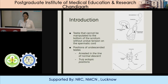Undescended testes can be best defined as testes that cannot be manipulated to the bottom of the scrotum without undue tension on the spermatic cord. There could be an arrest in the line of normal descent, or it could be a truly ectopic position, which could be pubo-penile, femoral, perineal, or transverse ectopia.